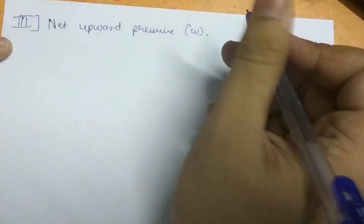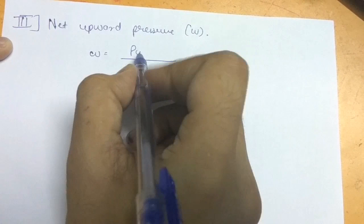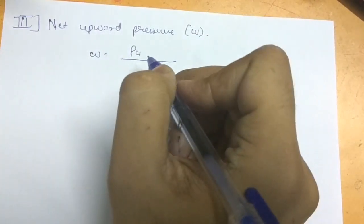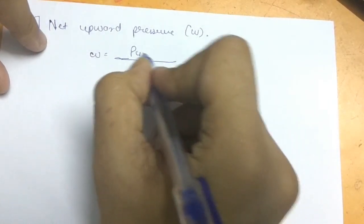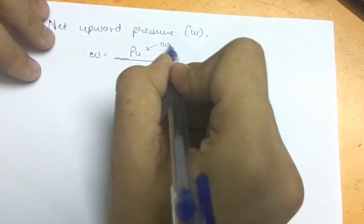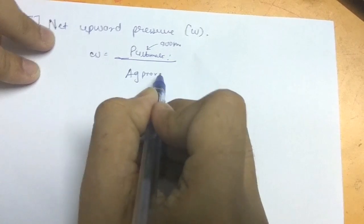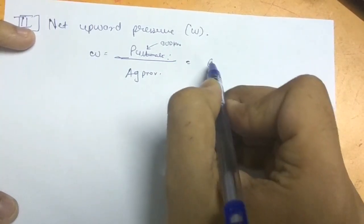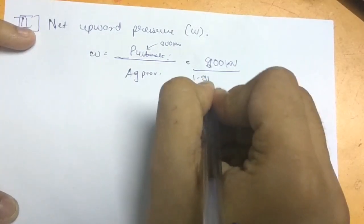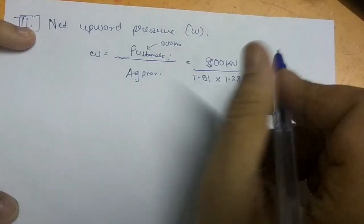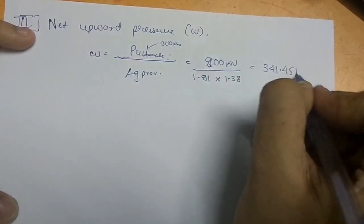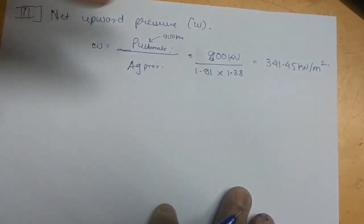The third step is to calculate the net upward pressure (W). Note this uses the ultimate load, not the working load used for sizing. Net upward pressure W = 900 kN ÷ (1.91 × 1.38) = 341.45 kN/m². Once we have this, the next step is to calculate the bending moment acting on the slab.